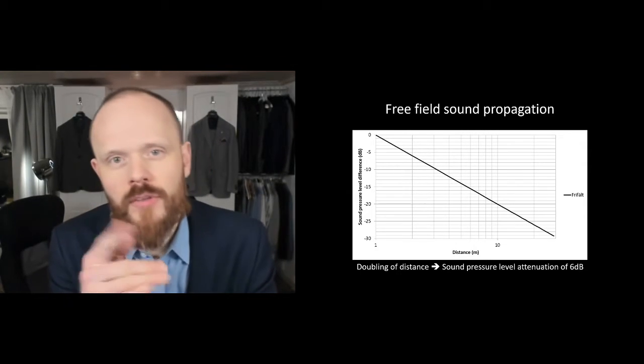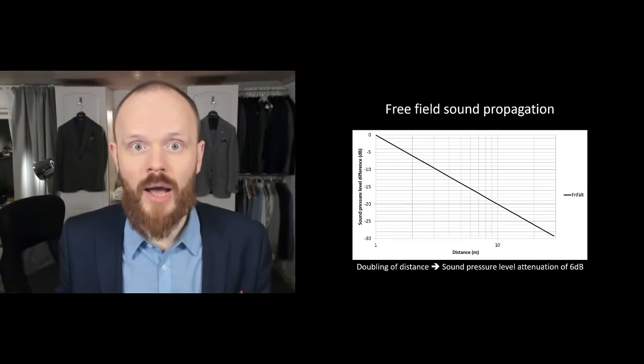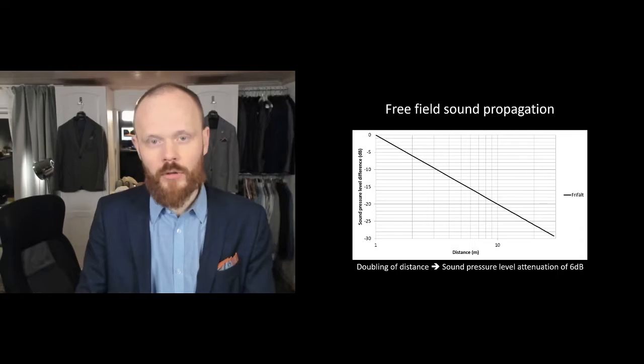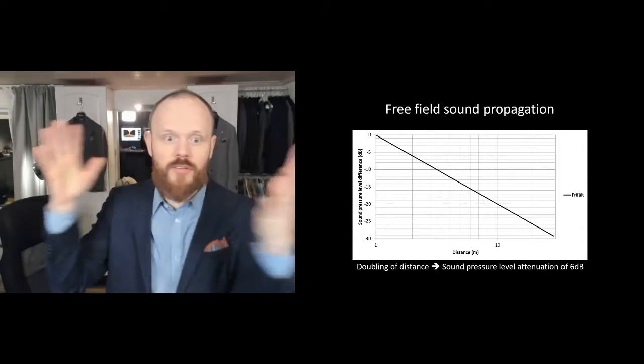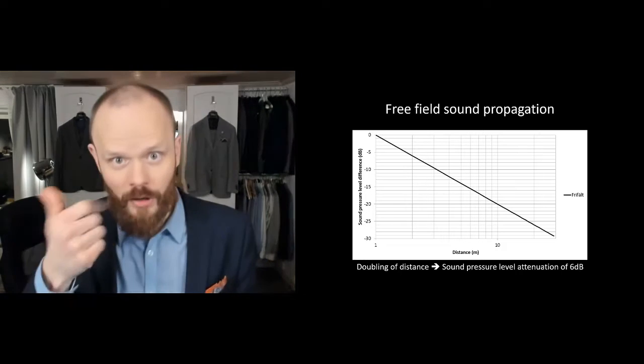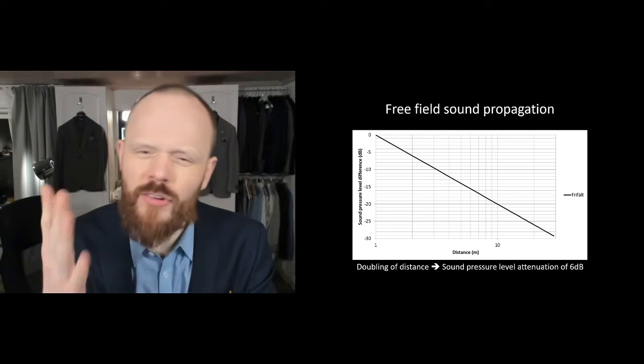When you have free field sound propagation, that is when there are no reflective surfaces nearby, it could be for instance a very tall chimney and the sound comes out from the top of that chimney. There is nothing that the sound can be reflected against. Then you have a perfect example of free field sound propagation.